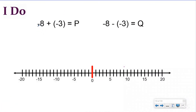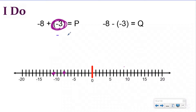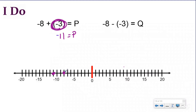For our first I Do problem, we're starting at negative eight — that's our first addend. We don't have to change anything because this is already an addition problem. We're starting at negative eight and adding a negative, which means we move three units to the left, because a negative number tells us to go left on the number line. Moving one, two, three: negative eight plus negative three gives us negative eleven, so p equals negative eleven.